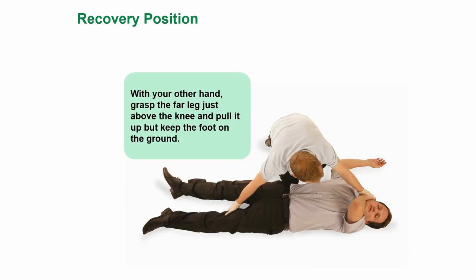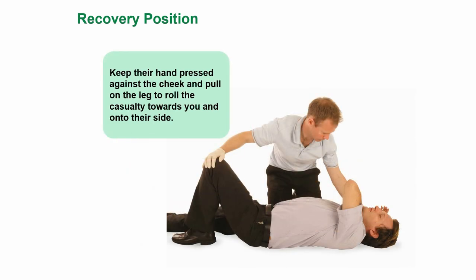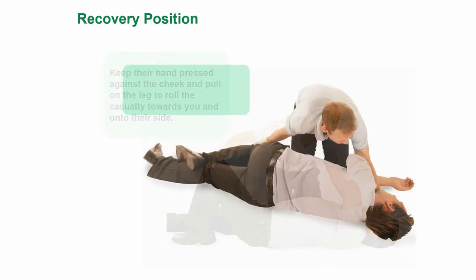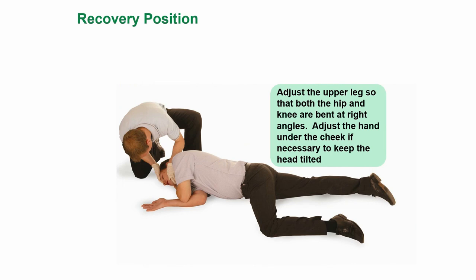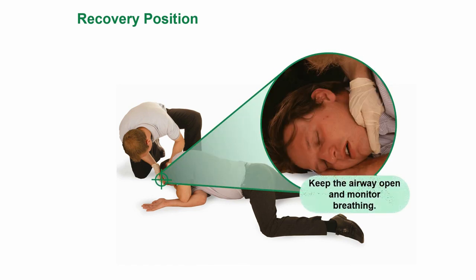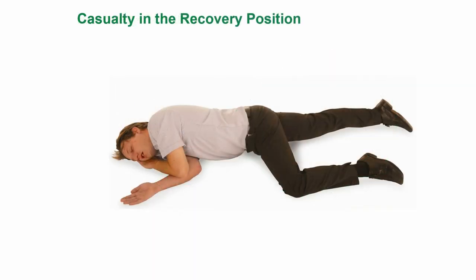With your other hand, grasp the far leg just above the knee and pull it up, keeping the foot on the ground. Keep the hand pressed against the cheek and pull on the leg to roll the casualty towards you and onto their side. Roll gently, supporting the head constantly. Adjust the upper leg so that both the hip and the knee are bent at right angles. Adjust the hand under the cheek if necessary to keep the head tilted. Keep the airway open and monitor breathing. This is a casualty in the recovery position — it may be worth replaying this video a couple of times, as the recovery position is an important part of first aid.